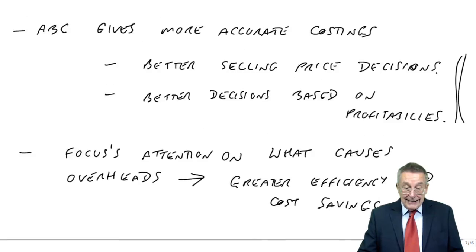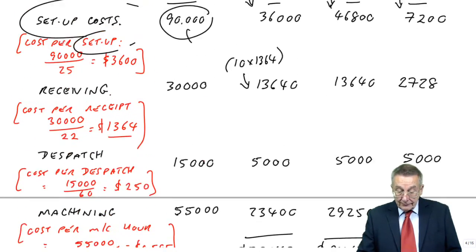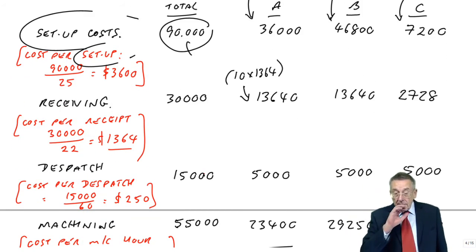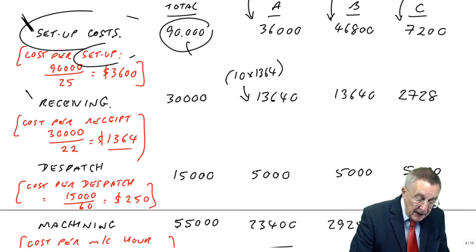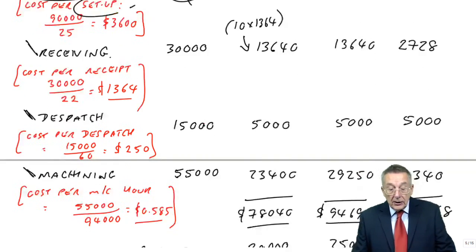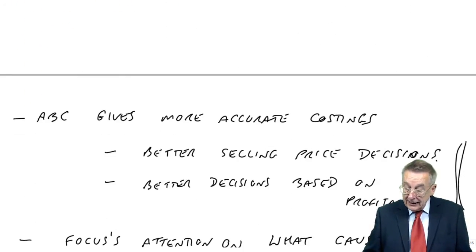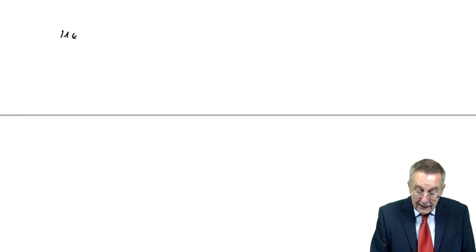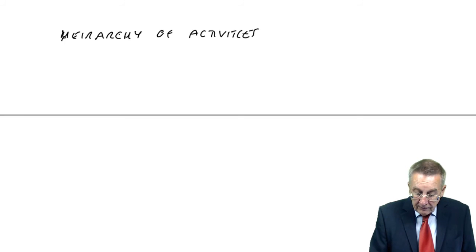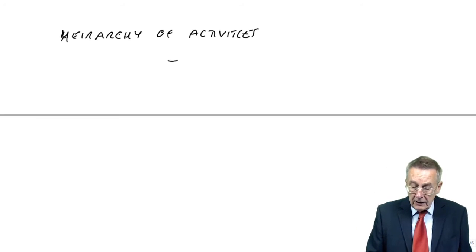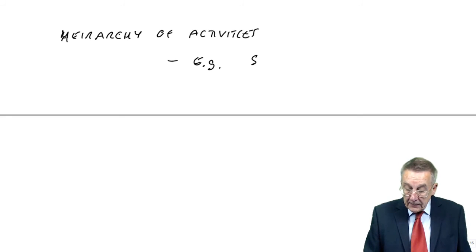Finally, a little bit of terminology. When we run through the example, we look to see where costs are incurred. We have these various activities setting up, receiving, dispatch, machining. We call those the hierarchy of activities. So, that's just listing the various activities. So, hopefully, you're with me. For example, setups.